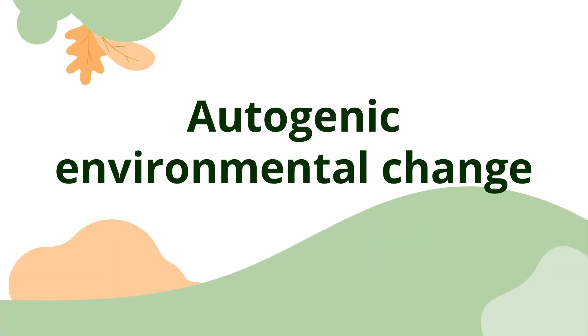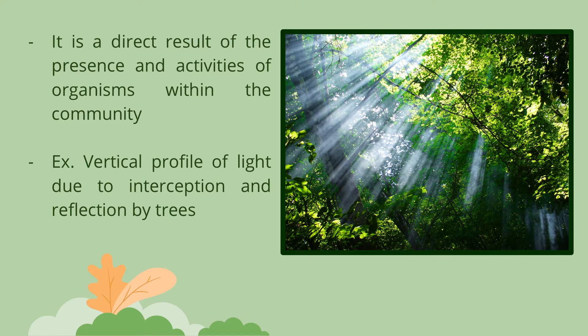Autogenic environmental change is a direct result of the presence and activities of organisms within the community. An example would be the vertical profile of light due to interception and reflection by trees. One feature common to all plant succession is autogenic environmental change.